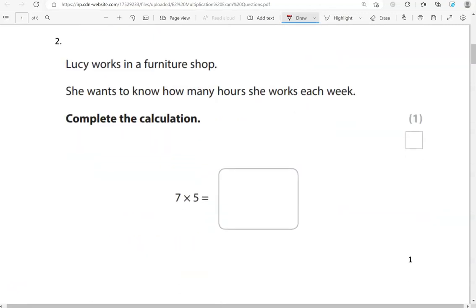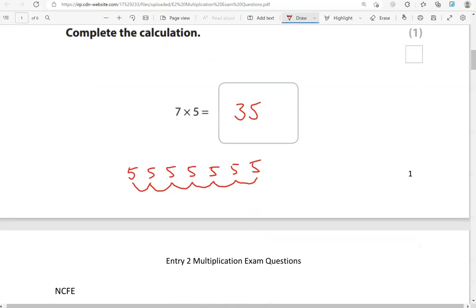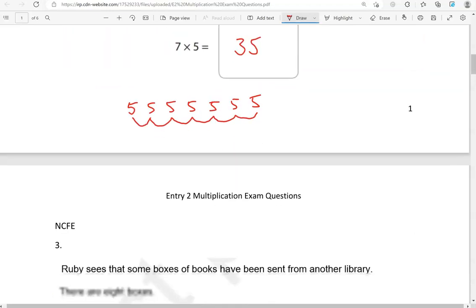Lucy works in a furniture shop. She wants to know how many hours she works each week. Complete the calculation: 7 times 5. So 7 lots of 5. 1, 2, 3, 4, 5, 6, 7 lots of 5. So 5, 10, 15, 20, 25, 30, 35. That is, if you don't know in your head that 7 times 5 is equal to 35.